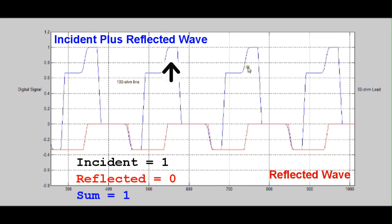To reiterate, the blue curve is the sum of all of the incident and reflected waves. The red curve is the reflected wave off of the 50 ohm load.